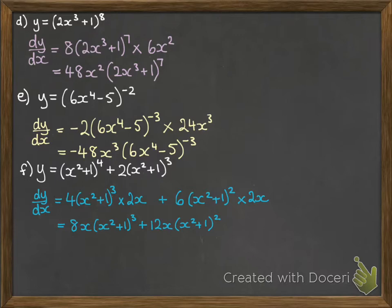So your key thing here is to remember: differentiate the outside, leave the inside alone, then differentiate the inside and multiply them together.